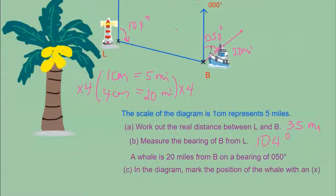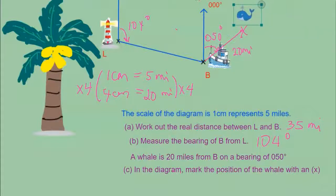Your four centimeters is equivalent to 20 miles, so label that as 20 miles as well. In the diagram, mark the position of the whale with an X — and that's where your whale is.